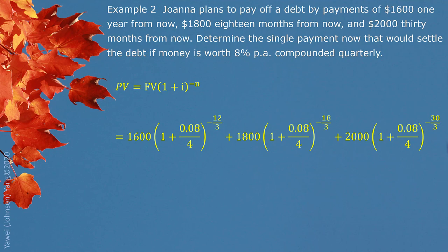Interest is compounded quarterly, so the periodic interest rate is 8% divided by 4. For each present value, we determine the compounding period: the first is 1 year (12 months divided by 3 months per quarter), the second is 18 months divided by 3, and the third is 30 months divided by 3. All exponents are negative because we are paying the debts early and should pay less. The total single equivalent payment is $4,717.20.